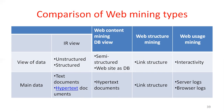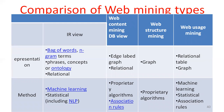The representation for the IR view is a bag of words — including frequent terms and phrases — and concepts or relations. The representation for the database view is an edge-labeled graph and relational format. The representation for web structure mining is also a graph, while web usage mining uses relational data tables and graphs.